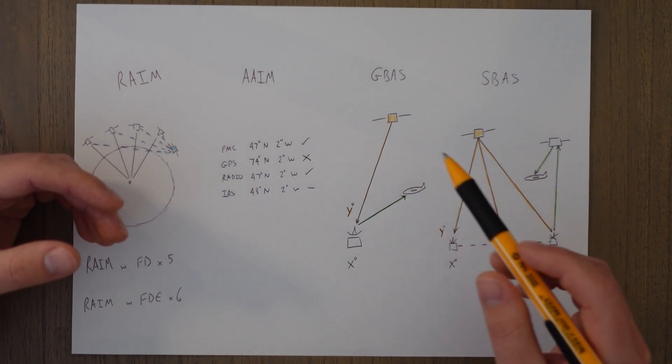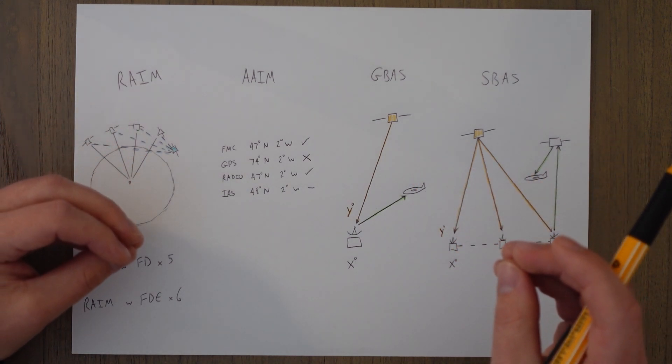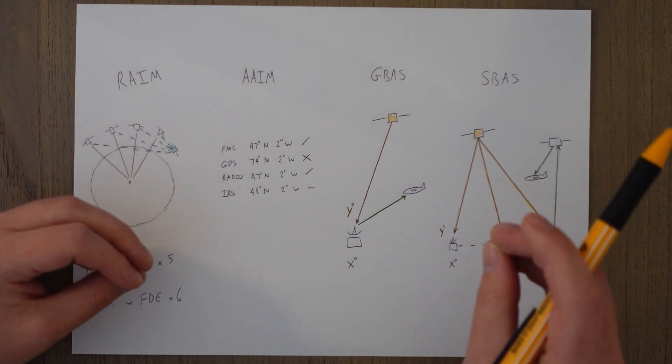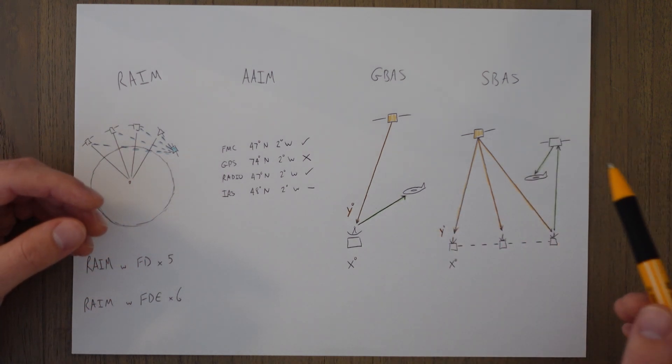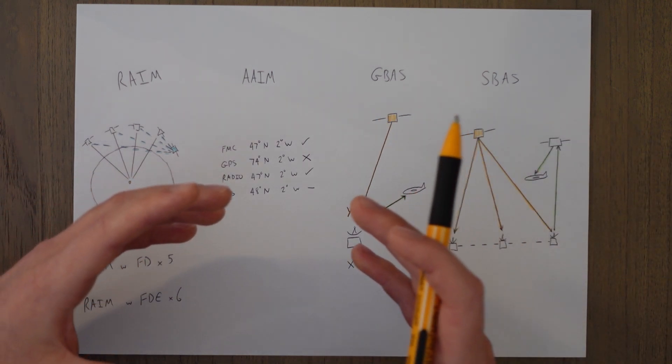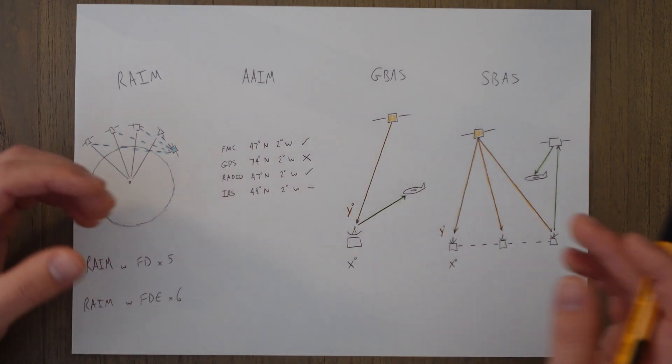SBAS has the advantage over GBAS because it can pinpoint different satellites and different corrections for each of those satellites whereas GBAS just sort of applies a correction to that area that you're in.